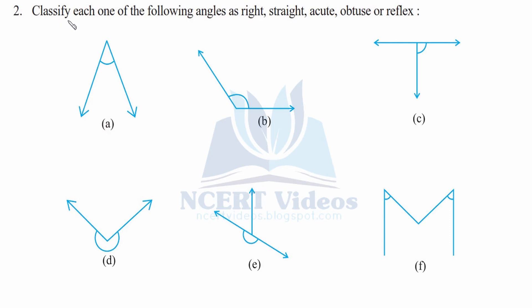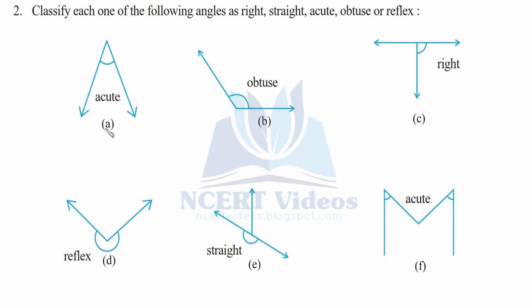Question 2: classify each of the following angles as right, straight, acute, obtuse, or reflex — parts a to f. Part a is an acute angle. Acute is less than 90 degrees. As you can see, if you extend it, it makes 90 degrees in any direction, and the angle shown is less than that — so this is an acute angle.